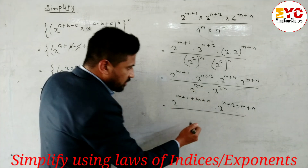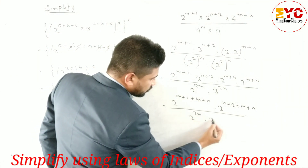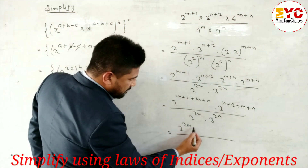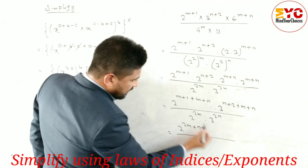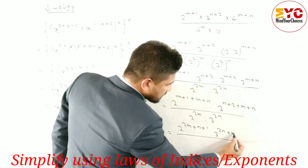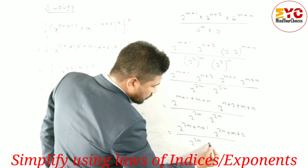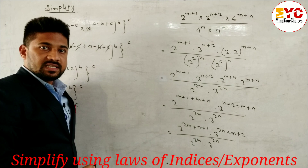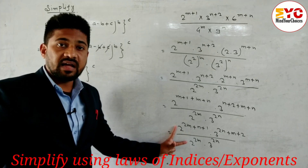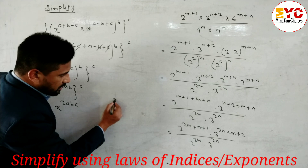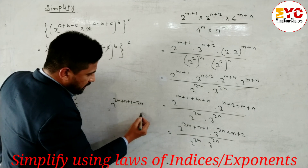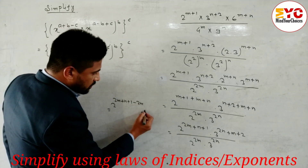Here we have base 2 and base 3, so we cannot combine them — just write 2^(2m) × 3^(2n). Now solving: for base 2, the power is 2m+n+1, and for base 3 the power is n+2+m+n = 2n+m+2. We divide by 2^(2m) × 3^(2n). In division, we subtract the powers, so we write 2^(2m+1+n+1-2m) × 3^(...).